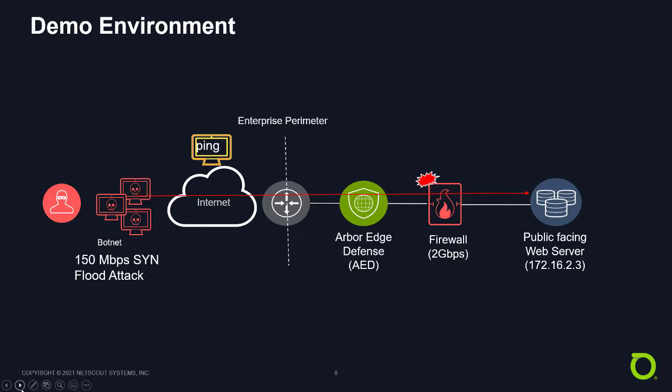Outside that perimeter is a botnet that's going to launch a small TCP SYN flood attack — about 150 megabits per second. Inside the perimeter on the right-hand side is a public-facing web server at IP address 172.16.2.3. Just before the web server is a firewall — a 2 gigabits per second firewall, matching our small environment. In front of that firewall is an Arbor Edge Defense device.